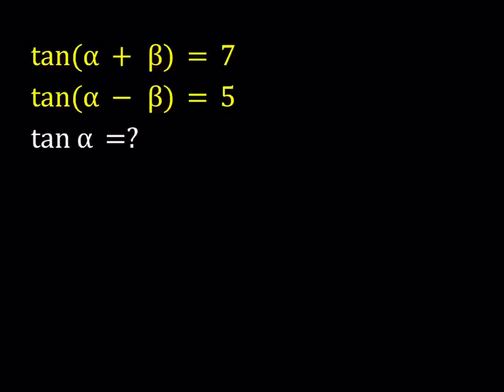Hello everyone. In this video we're going to be solving a trigonometry problem. We have tangent alpha plus beta equals 7 and tangent alpha minus beta equals 5, and we're supposed to find tangent alpha. I'm going to be presenting two different methods here. Let's start with the first method.